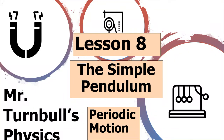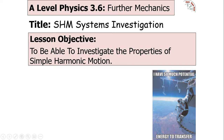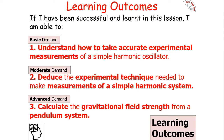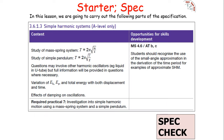Hello and welcome to today's lesson looking at the simple pendulum. This lesson forms part of the course on periodic motion found in the AQA A-level physics topic in paper 1 for further mechanics. In today's lesson we're going to investigate the properties of simple harmonic motion, take accurate experimental measurements of a simple harmonic oscillator, deduce the experimental technique needed to make measurements, and calculate the gravitational field strength from a pendulum system.